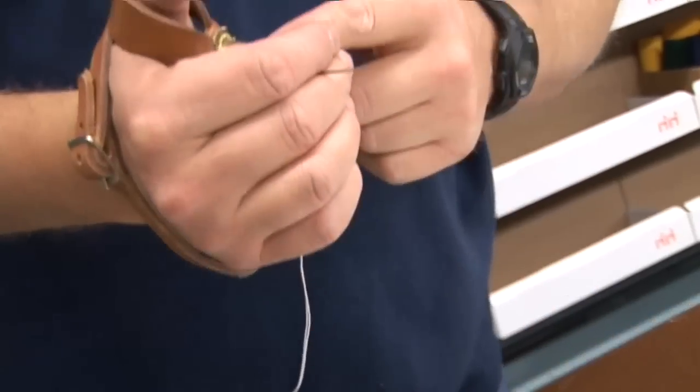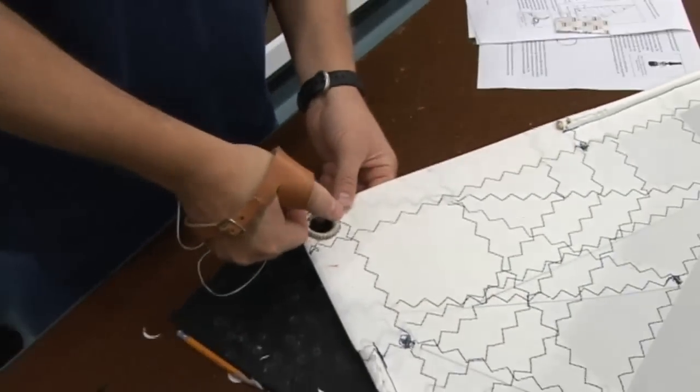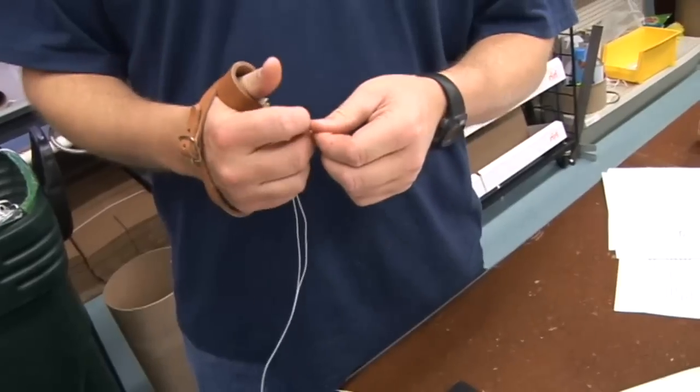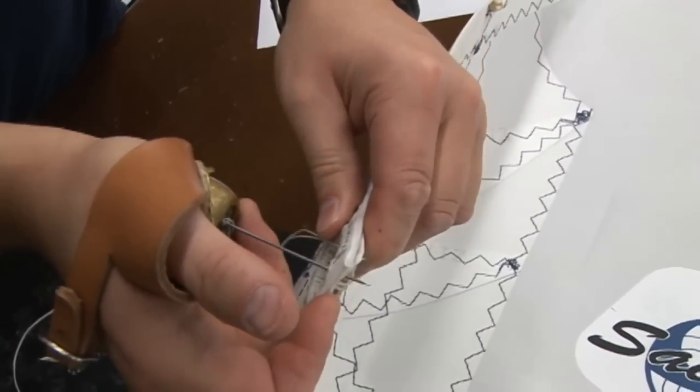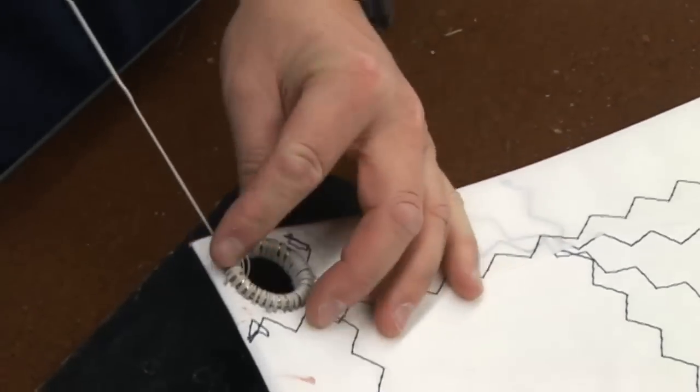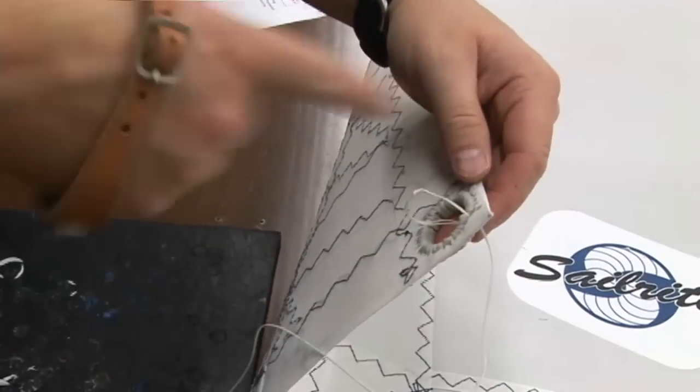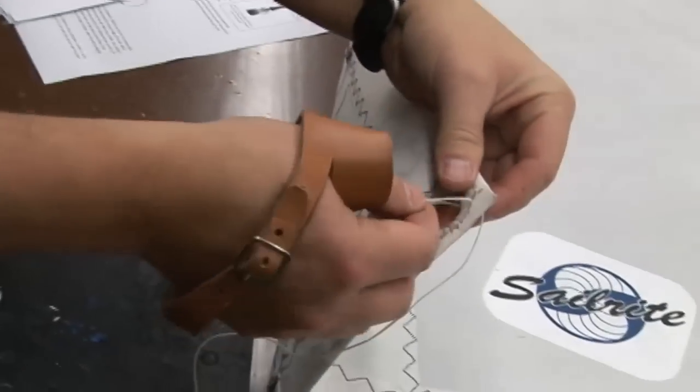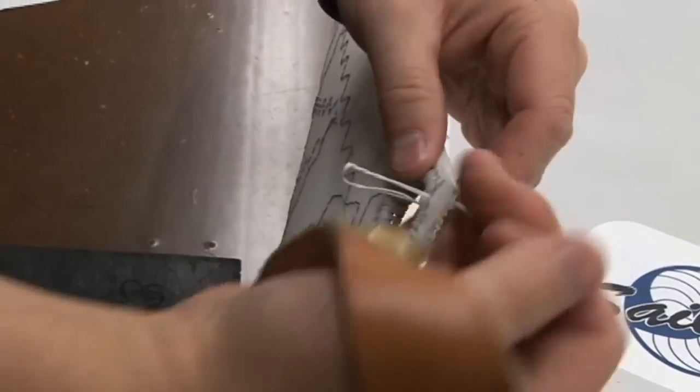Notice he's also using needle-nose pliers to help. Make sure you keep the knots clear from the bottom. As you went around the whole thing it gets kind of twisted, so sometimes if you're trying to pull through and nothing's getting tight on this side and it's staying loose, it's usually because you have it twisted up and that is pulled right into the hole and it won't go through. So make sure you untwist it and it will pull tight.